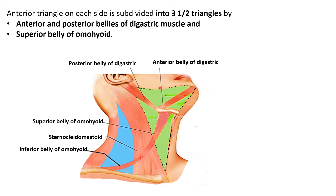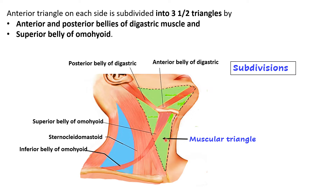The first subdivision is the muscular triangle, where the infrahyoid muscles are mainly located. Its anterior boundary is the midline of the neck, postero-superiorly it is bounded by the superior belly of the omohyoid, and postero-inferiorly by the anterior border of the sternocleidomastoid. The carotid triangle contains the common carotid artery, internal carotid artery, and external carotid artery. Its posterior boundary is the anterior border of the sternocleidomastoid, antero-superiorly it is bounded by the posterior belly of the digastric, and antero-inferiorly by the superior belly of the omohyoid.